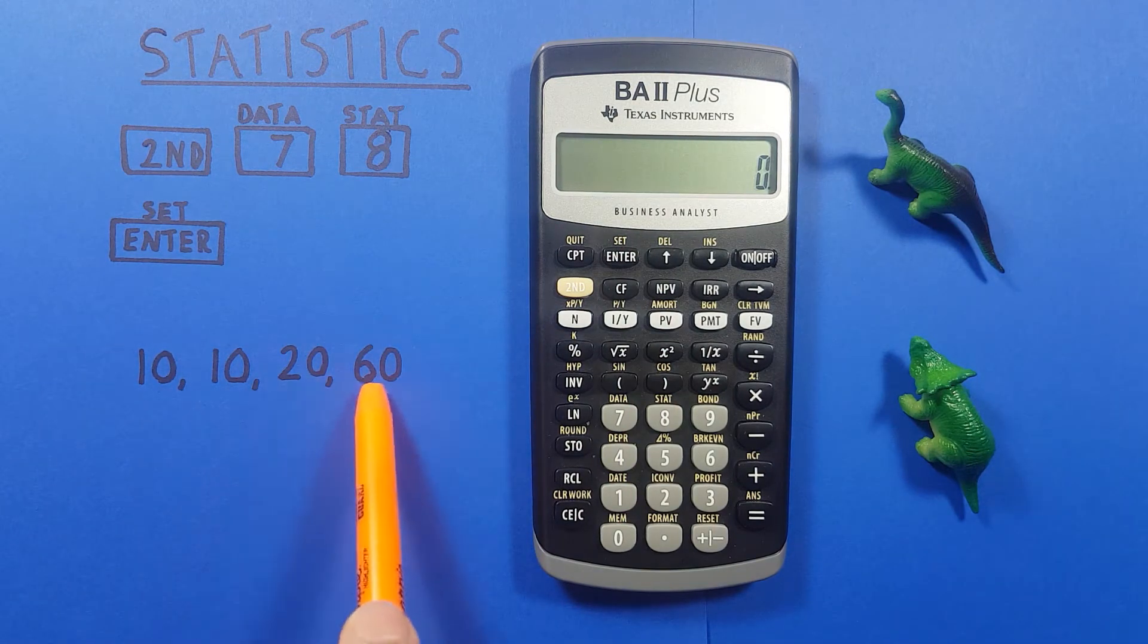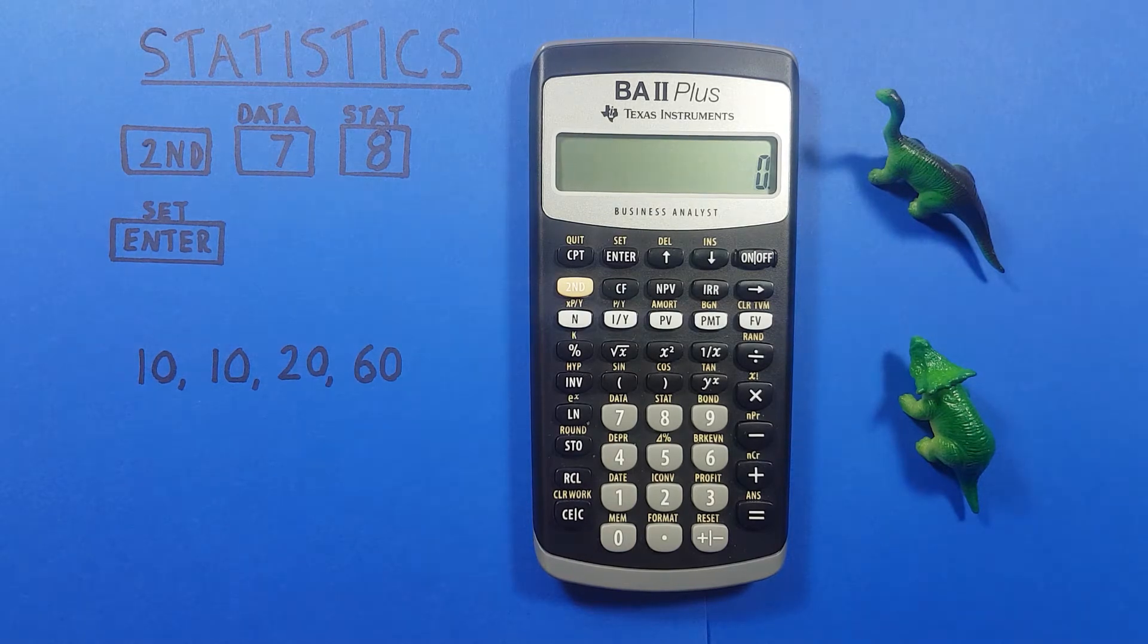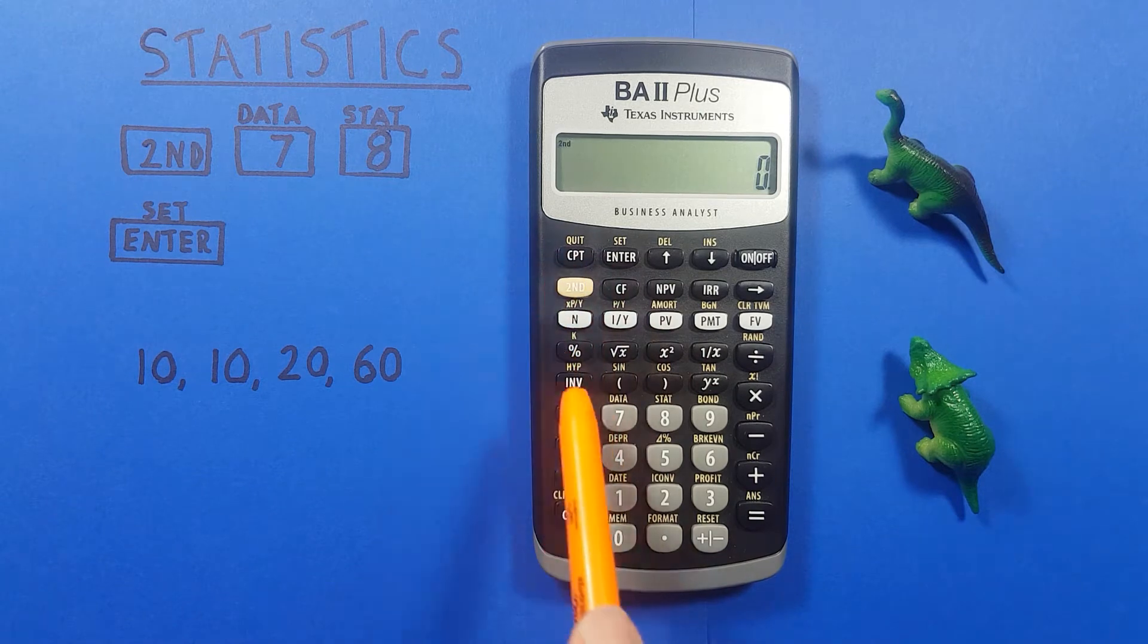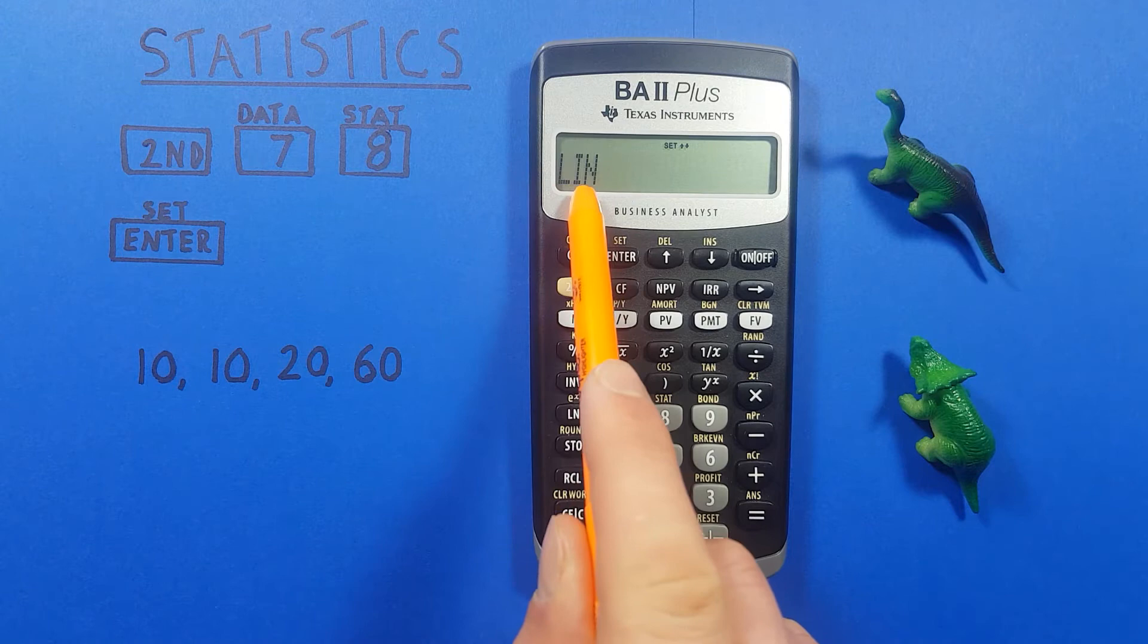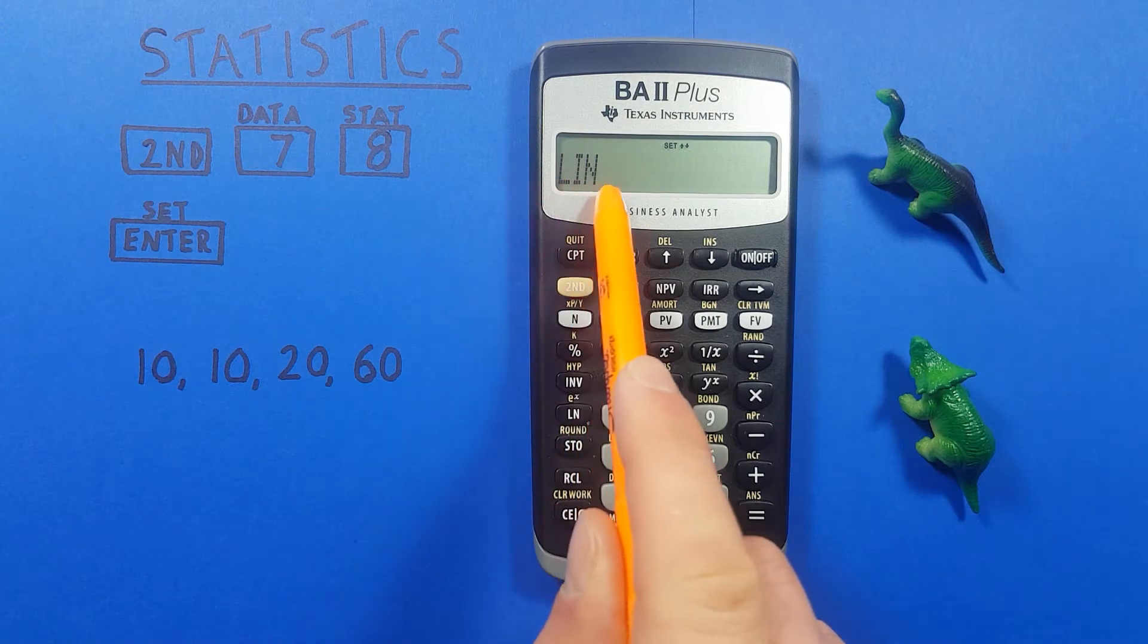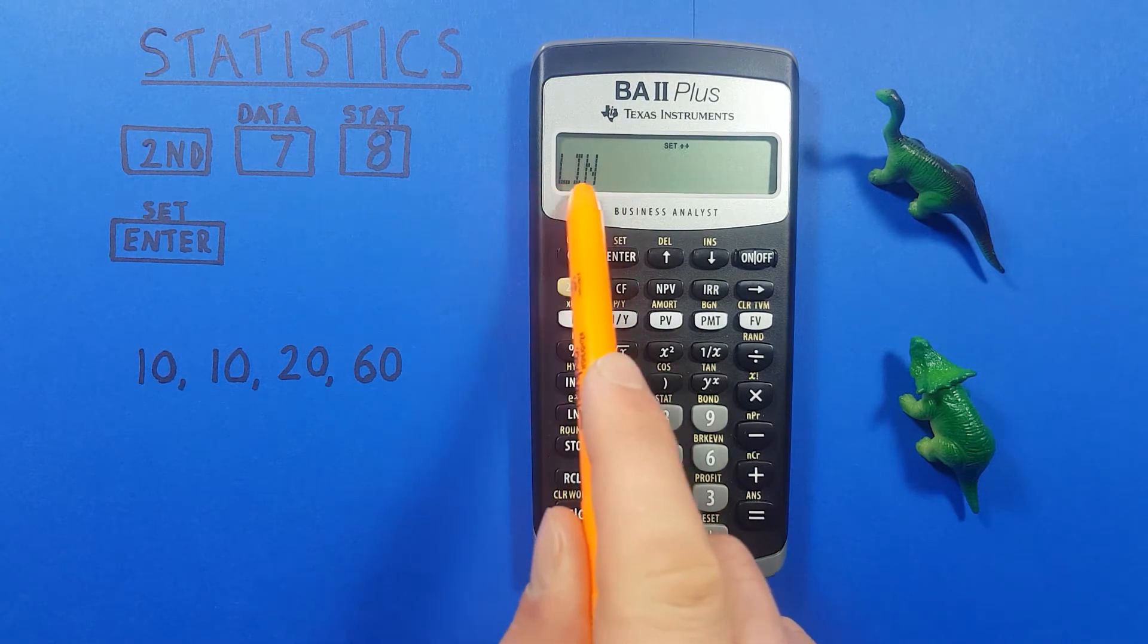We're using single variable data so the first thing we want to do is turn our calculator into one variable statistics mode. To do that we press second function and then eight with the second function of stat and you should see this lin on top. This is not what we want, we want to turn this to one variable statistics mode.